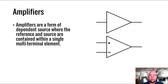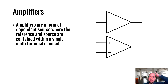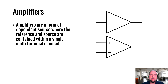Before we talk about op amps, what's an amplifier? An amplifier is a new circuit symbol - this is exciting. We've talked about resistors, voltage supplies, and current supplies. An amplifier is basically just stuff you've already seen, namely dependent supplies, that are all wrapped into a multi-terminal circuit element.